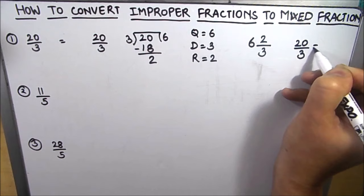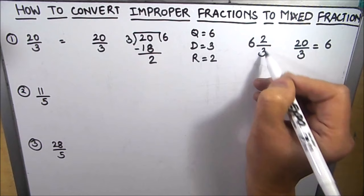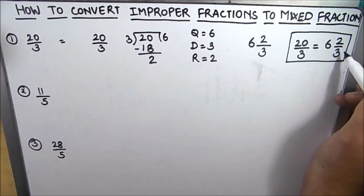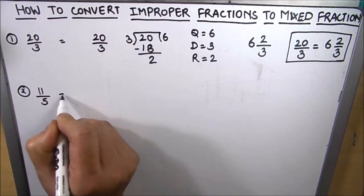So 20 over 3 can be written as 6. It is dividing into 6 parts and the leftover part is 2 thirds. 6 and 2 thirds is the mixed fraction for 20 over 3.